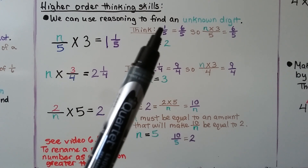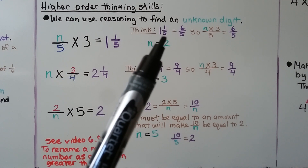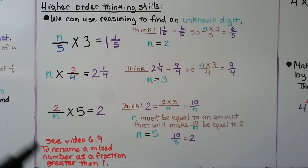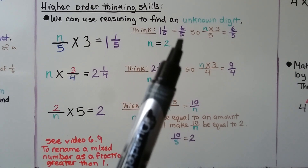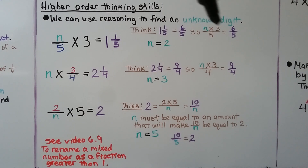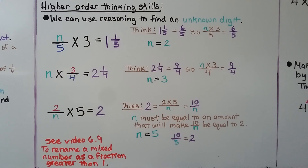We think: 1 and 1 fifth as a fraction greater than 1 — we do 1 times 5 is 5, add the numerator 1, we get 6 fifths. If you don't understand how to do that, it's linked in the description — video 6.9 — where we learn to rename a mixed number as a fraction greater than 1. So 1 and 1 fifth equals 6 fifths. That means n times 3 for the numerator needs to equal 6 over the denominator 5. Some number times 3 is equal to 6 — that would be 2. 6 divided by 3 equals 2, so n must equal 2. It must be 2 fifths times 3, which equals 1 and 1 fifth.